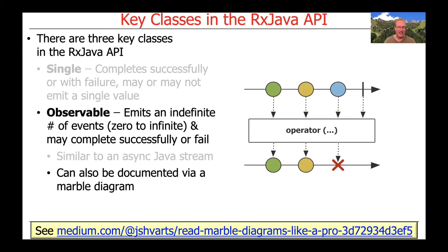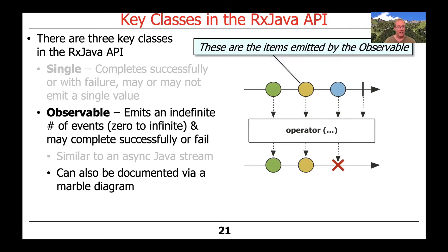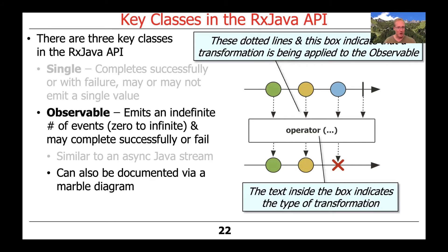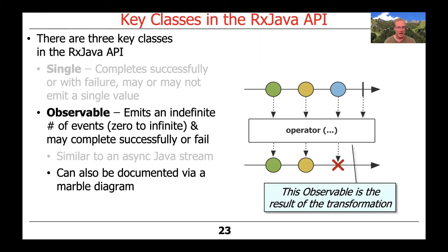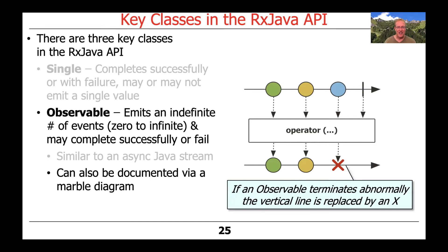You can also document an Observable with a marble diagram. As with Flux, there's a timeline where time flows from left to right for an Observable. These are the items that the Observable will emit. The dotted line and box indicate that a transformation is being applied to the Observable, and the specific transformation or method itself is given as the name inside the box. What you get as a result is a new Observable containing the results of whatever transformation took place. If everything goes well, there's an indication that the Observable completed successfully, but if something goes amiss, the indication for that is with a red X.